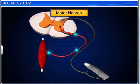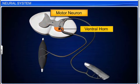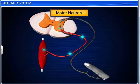Motor, or efferent neurons, are found in the central nervous system, for example the ventral horn of the spinal cord. They carry impulses from the central nervous system to organs such as the muscles and glands.